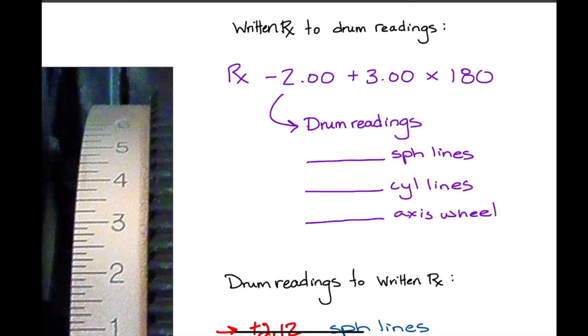So for the sphere lines, what power drum reading should I expect? Negative 2. Negative 2. And what axis wheel should I expect? Zero. Oh good, I was about to write 180 in there. Good, because these two are associated, right?